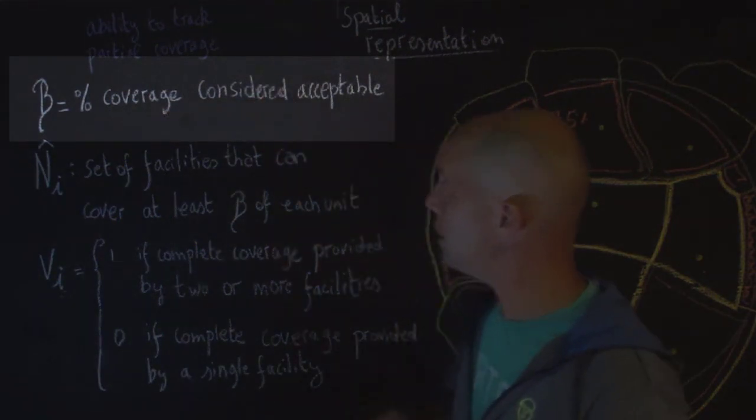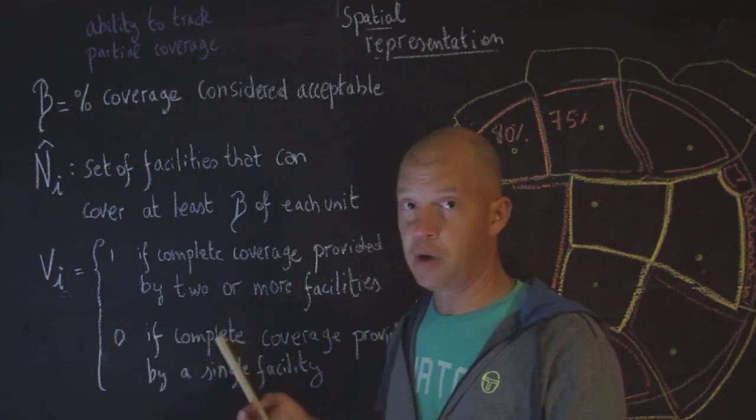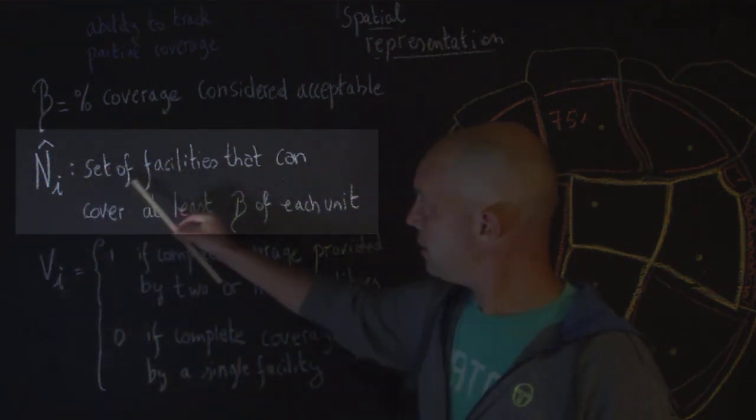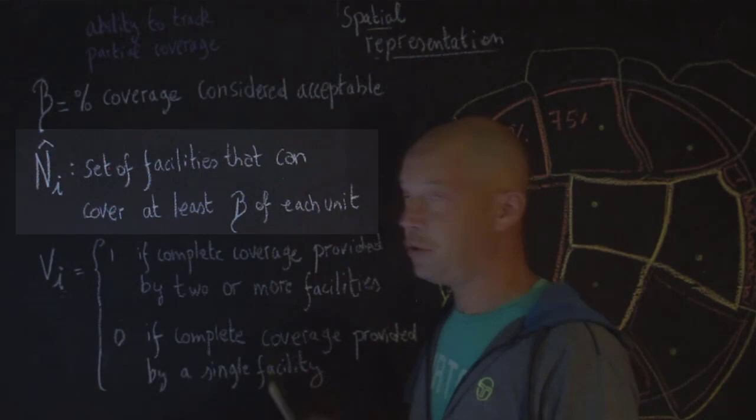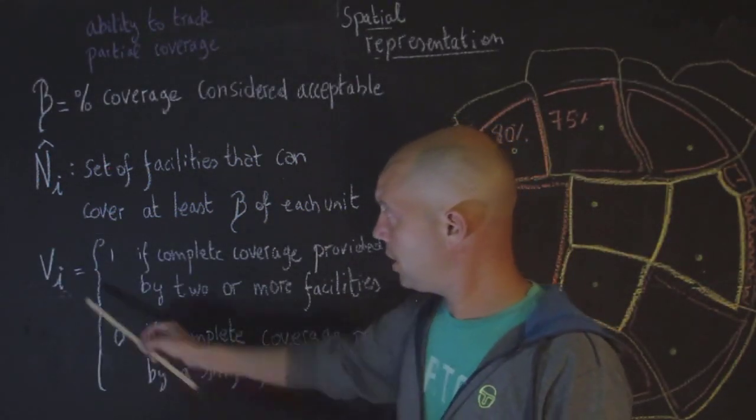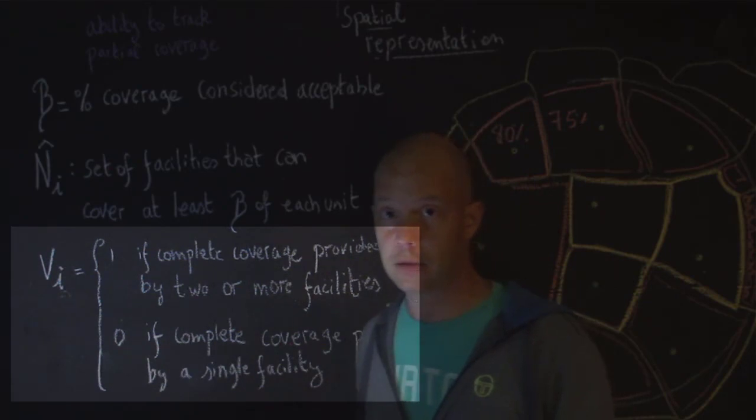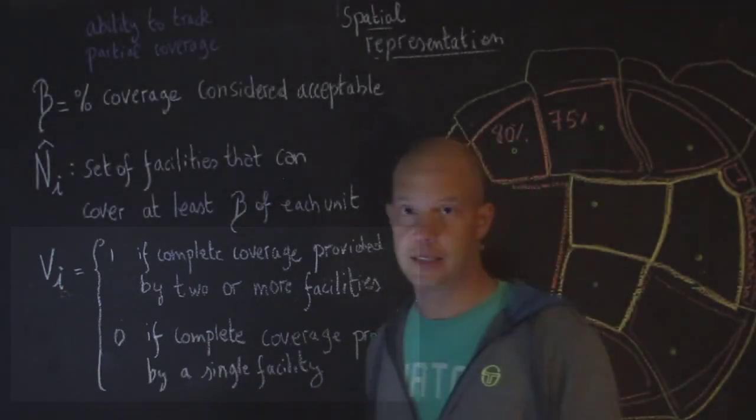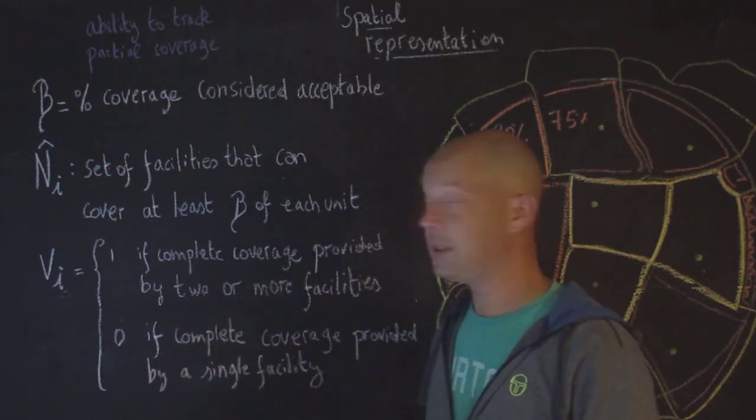So, we introduce a new parameter, beta. And beta is a percentage coverage that is considered acceptable. So, again, I could say that as long as this geographic unit is covered maybe 70% of the time, okay, that's good. So, I have a new set, N sub i with a little hat here. And that is the set of facilities that can cover at least beta percentage, so let's say 70% of each unit. And then, finally, I have a new decision variable. V sub i is equal to 1 if complete coverage is provided by two or more facilities for that particular demand unit i, and 0 if complete coverage provided by a single facility. So, now we can track more than one facility that can cover that demand unit, at what level can we cover that particular demand unit, and so on and so forth.